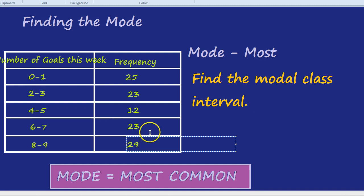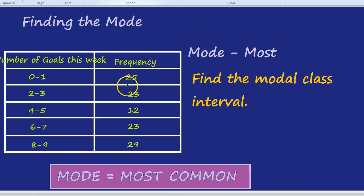Now, which is the modal class interval? You're probably wondering, is it 23? Because after all, 23 comes up twice. But actually, what do those 23s represent?